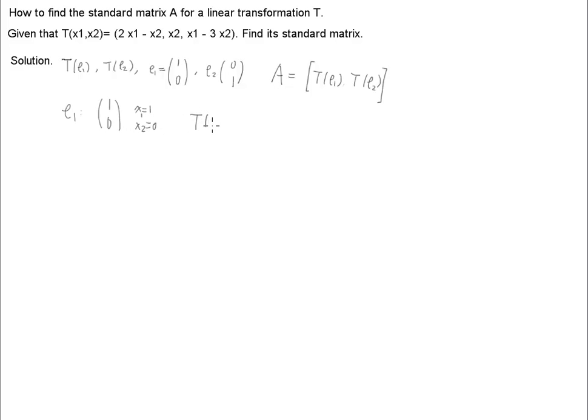So we have T(e1) is simply over here. So 2 times x1 is 1, minus x2 is 0. So this first one is 2. And then from here, x2 is going to be 0. And then x1 is again 1, and minus 3x2. So that's what we have.